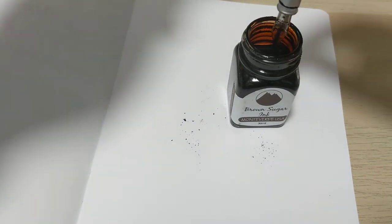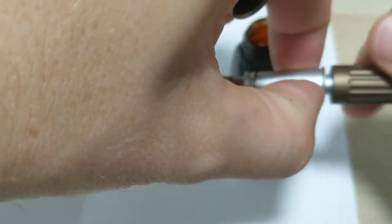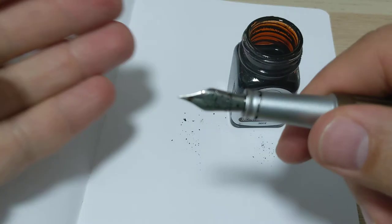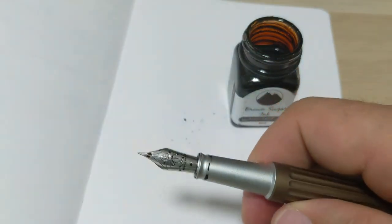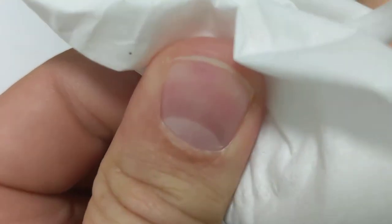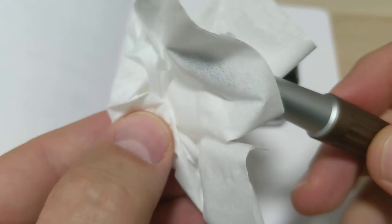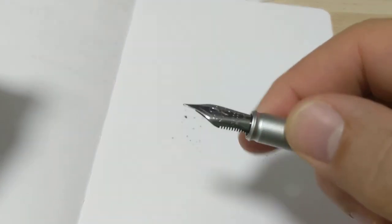One little thing with the anodize on the section - it's almost like a satin finish, so sometimes the ink will actually get in there a little bit. Let's wipe it off and see how it looks. That's not too bad, most of it came off. On some pens when you dip them in the bottle and fill them up, the section will hold a lot of ink depending on the finish, but this one isn't too bad. I thought it stuck in there more with this pen, but it's actually pretty decent.